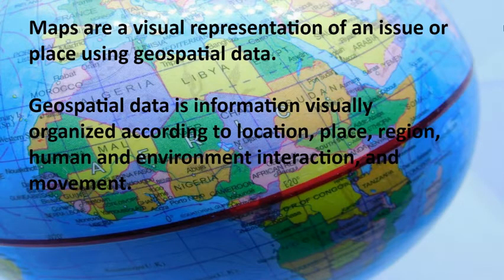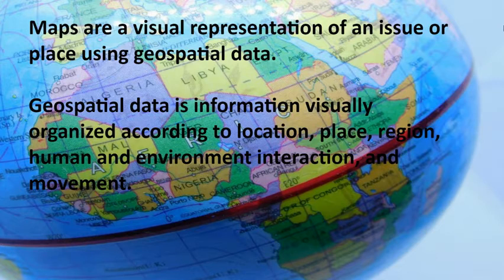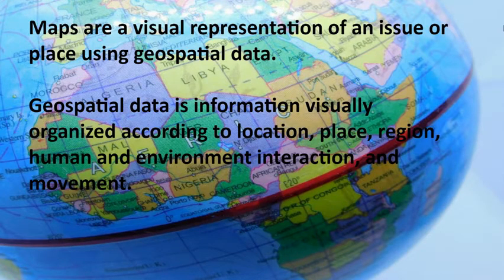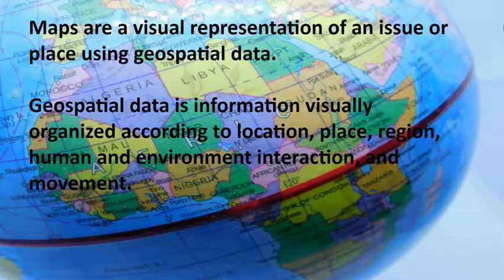Maps can be used to communicate physical information as well as human information. In this lesson, we will take a look at some of the major types of maps, as well as examples of maps that show spatial patterns of human behavior. Keep in mind, all maps are the product of a number of decisions made by the cartographer, or map maker, and must therefore be carefully analyzed for credibility.